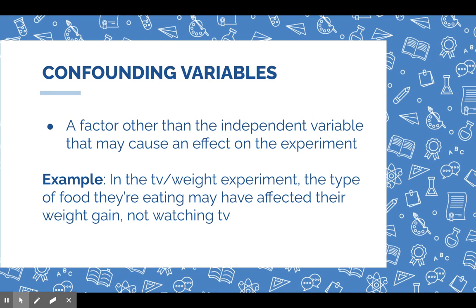As mentioned with illusory correlation, there are always confounding variables in an experiment. A confounding variable is when something other than the independent variable may cause an effect — something that confounds, meaning confuses, the results. In the TV weight experiment, maybe it's the type of food people are eating that affects their weight gain and not the TV watching, but you didn't measure that. You always have to think about the limitations — the things your experiment couldn't account for.